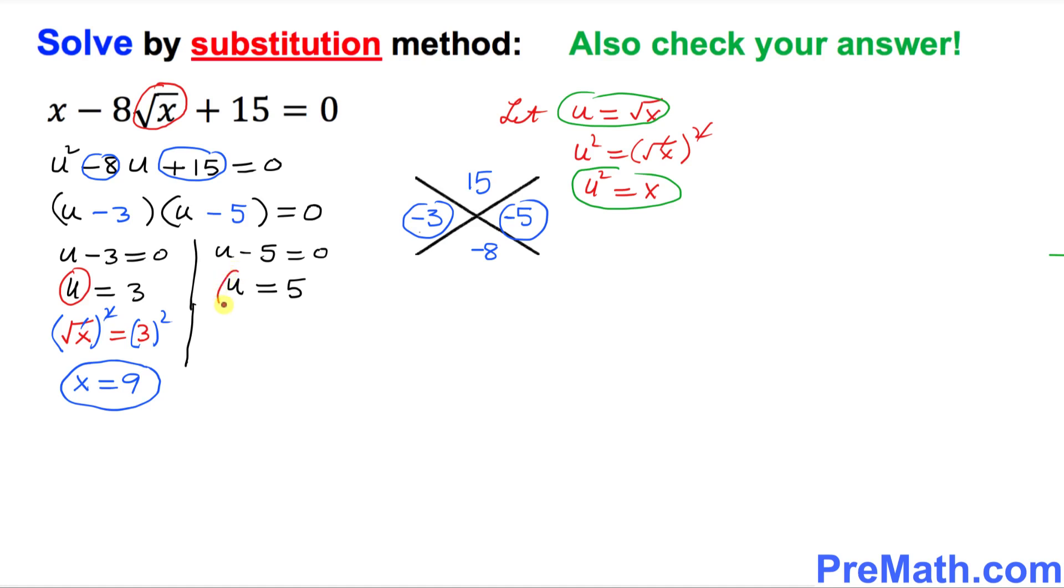Let's do the same thing on this side. u once again is square root of x. Let's put down square root of x equals to 5. Let's remove this square root part by taking the square on both sides. This is gone. So x turns out to be 25.